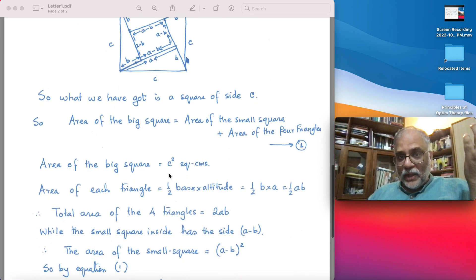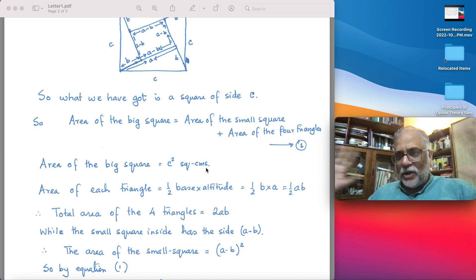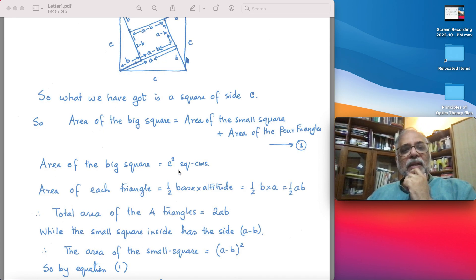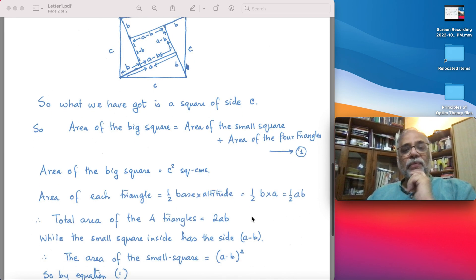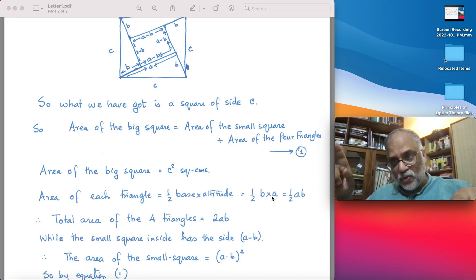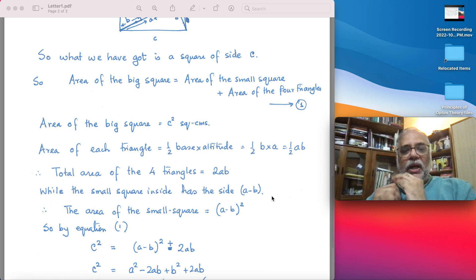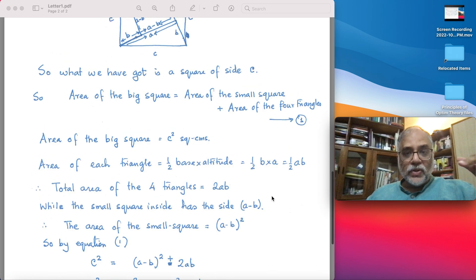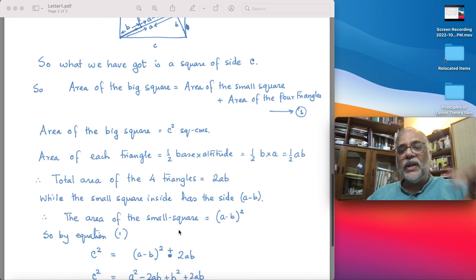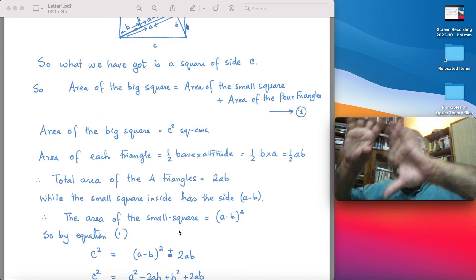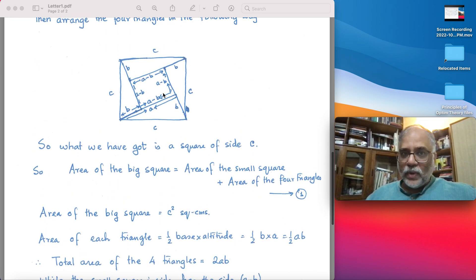Area of the big square is c² square centimeters, assuming all lengths are in centimeters. What is the area of each triangle? It's half base into altitude. The base is b, the altitude is a, so half ab. There are four triangles, so four into half ab, which is 2ab. The small square inside has the side a minus b, because this length is a, this little part is b, so a minus b. The small square has the area (a-b)².